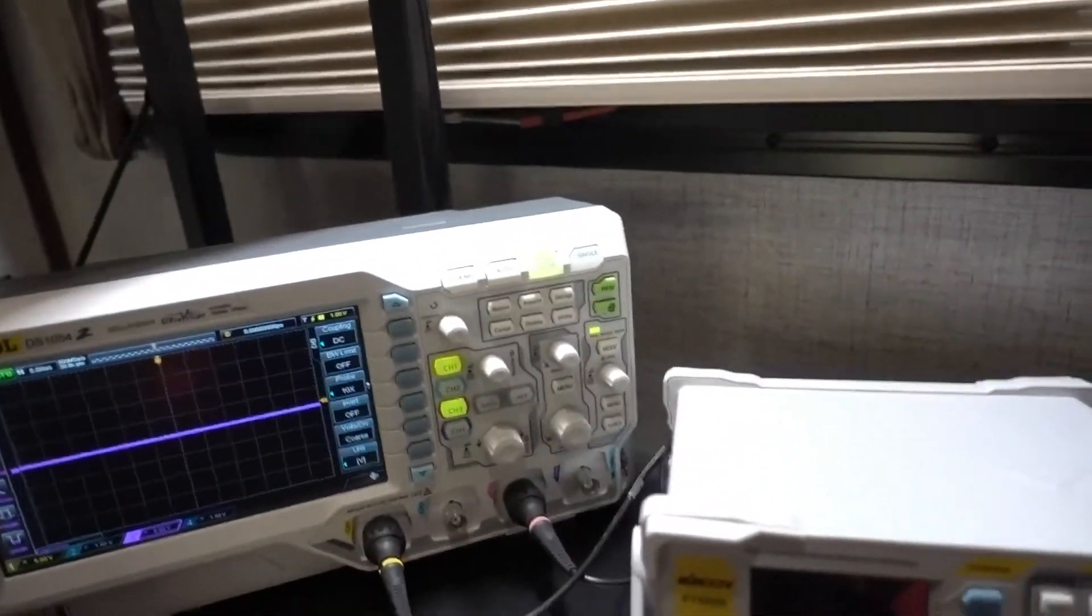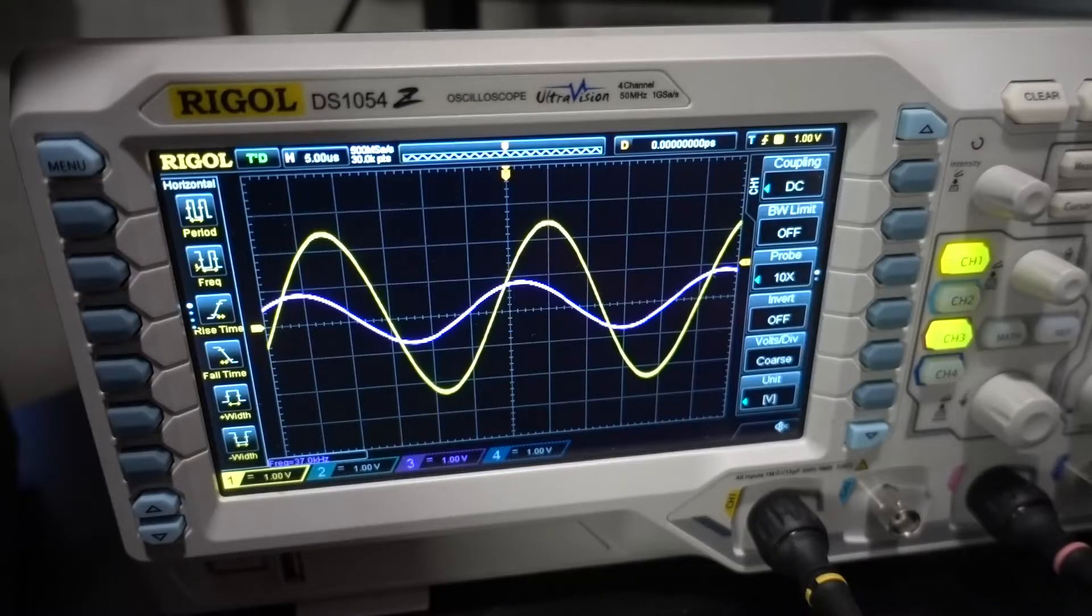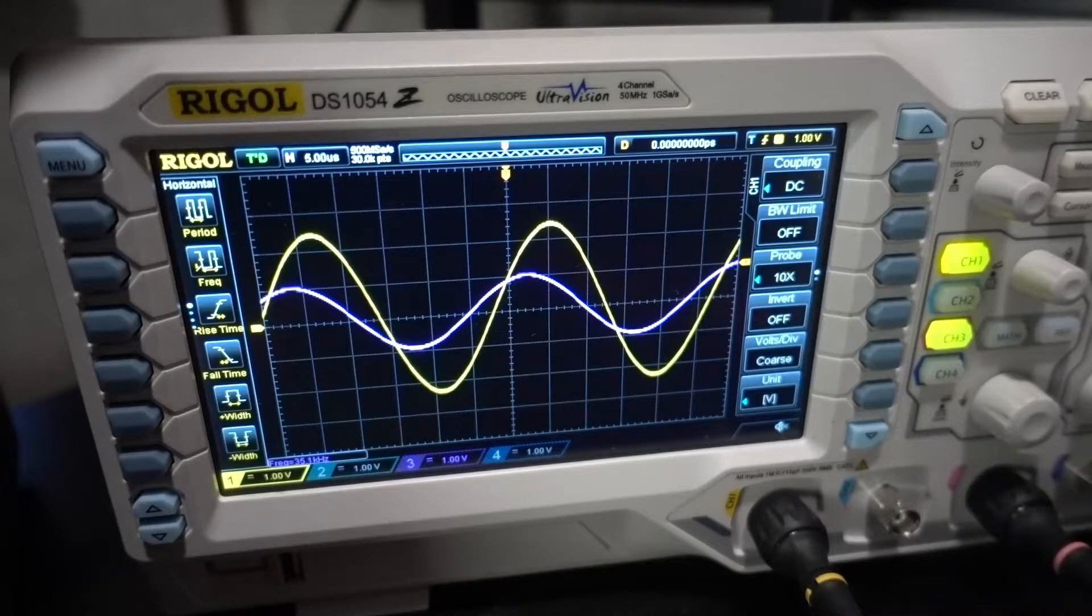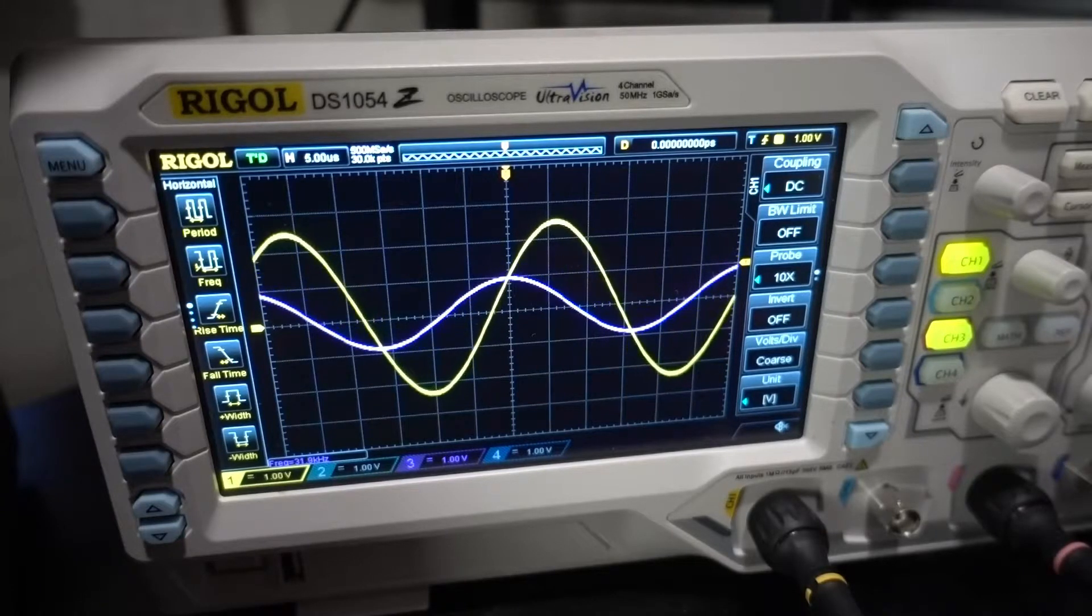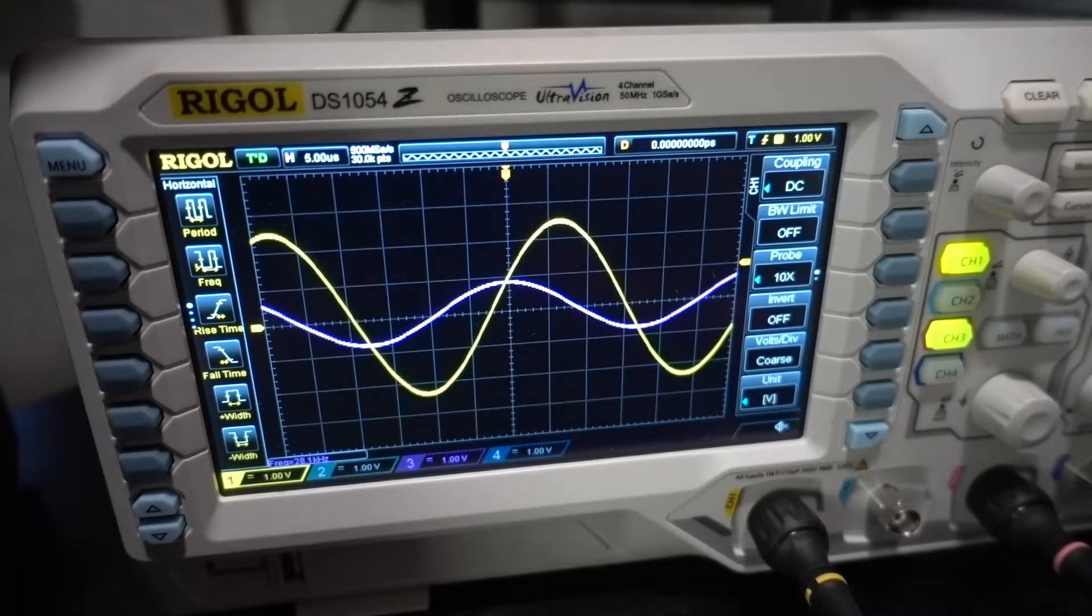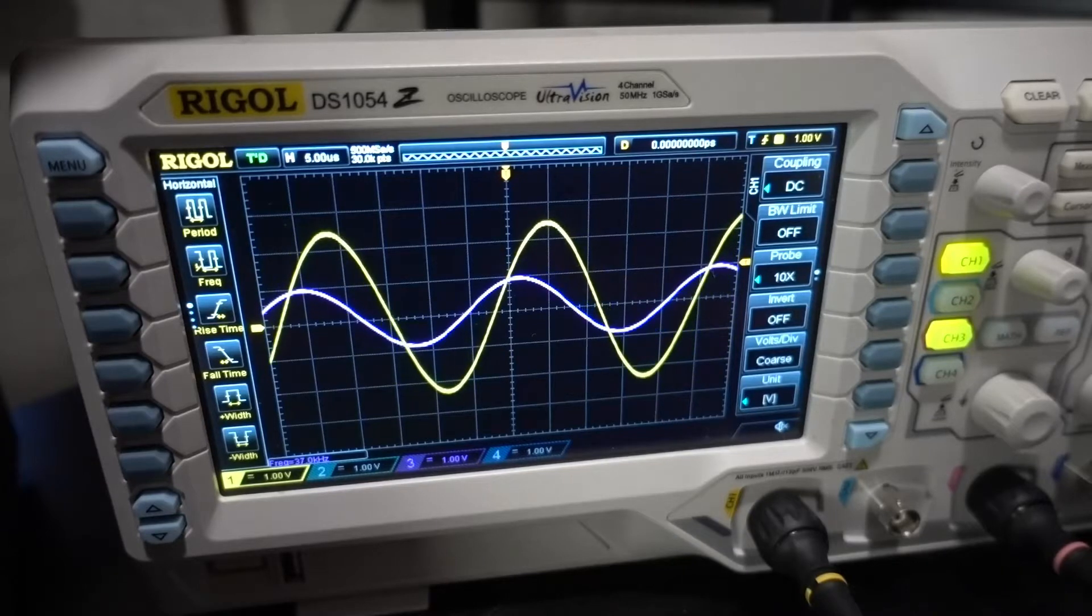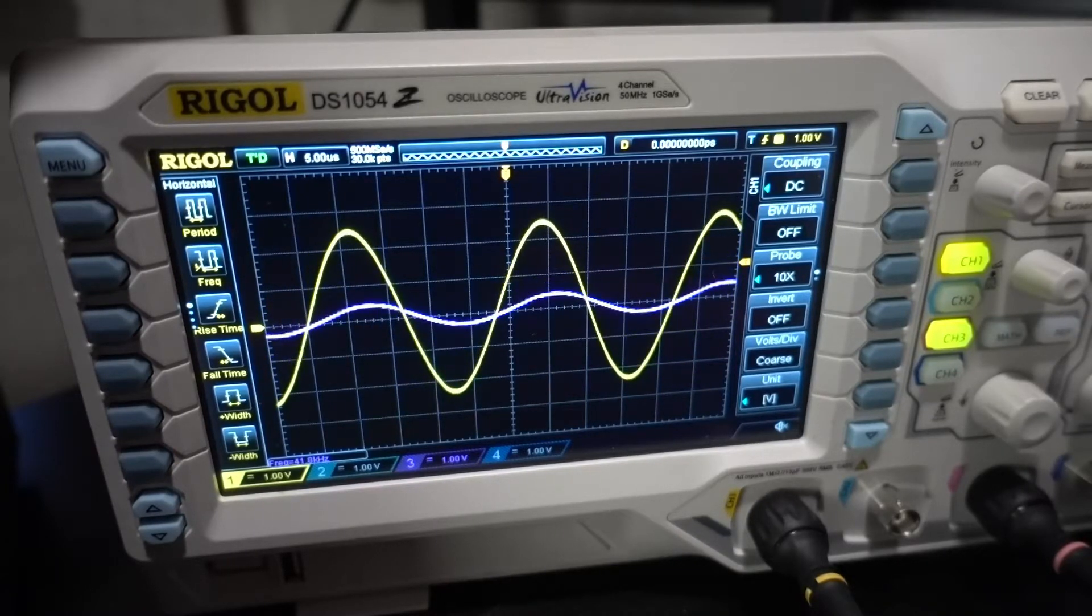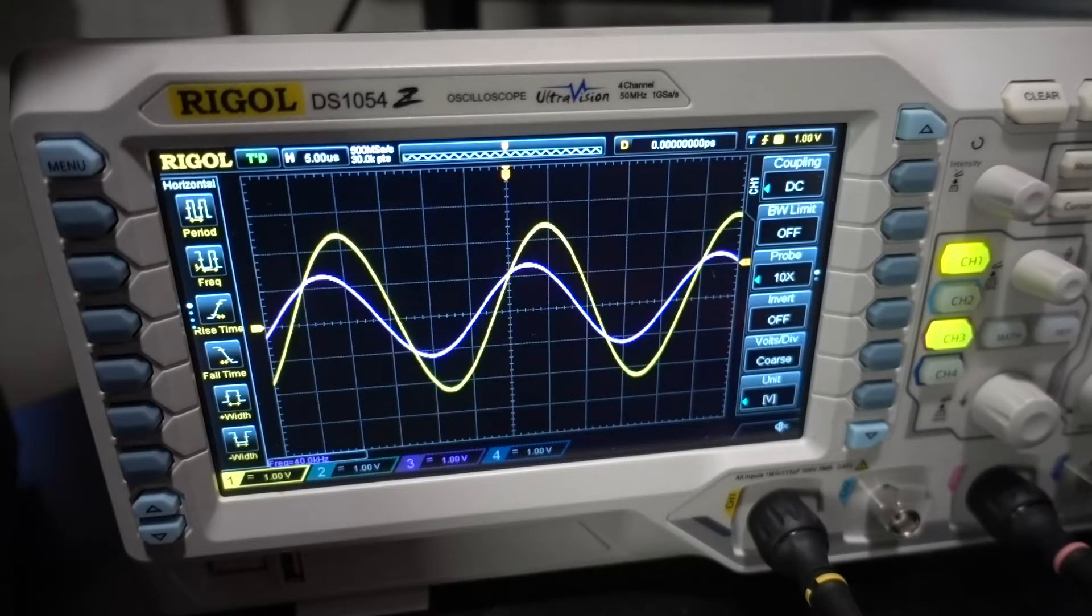And so when you hook this up, you want to see the maximum current you possibly can. And the purple one represents the current. As I'm adjusting this, it's about 40 kilohertz for the maximum voltage.